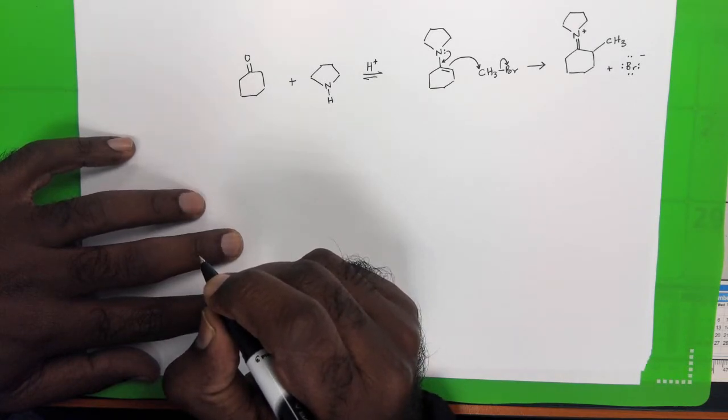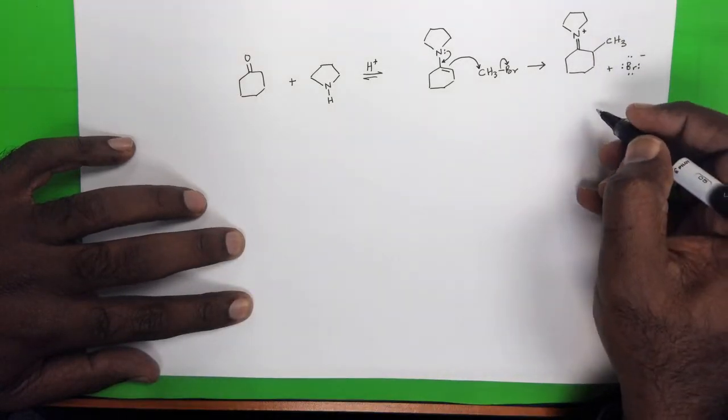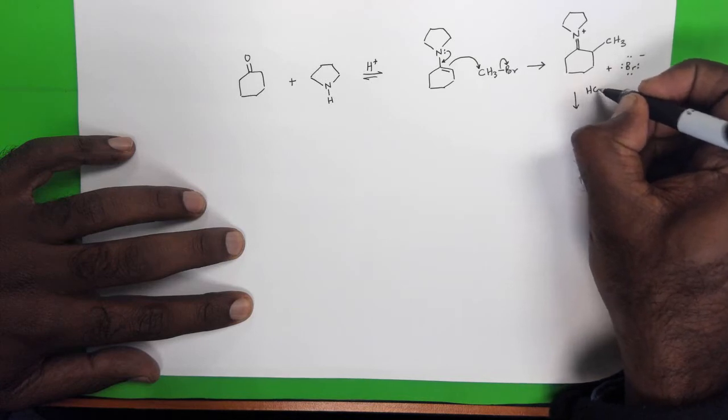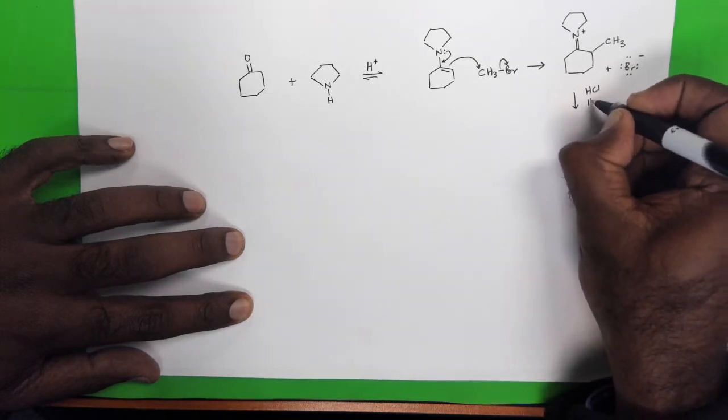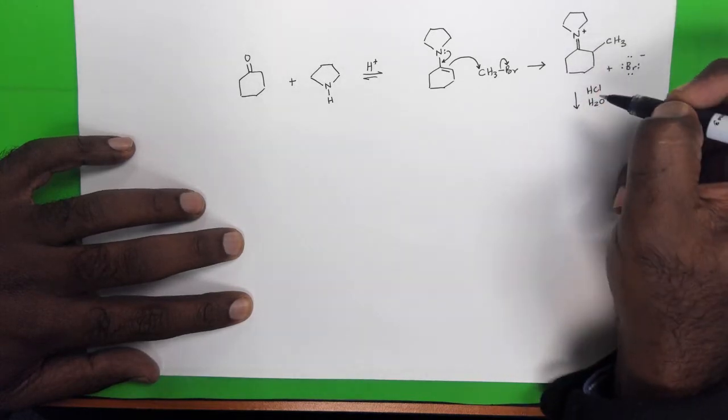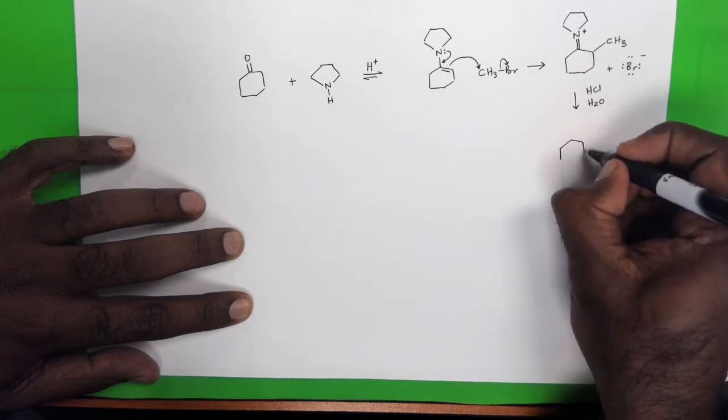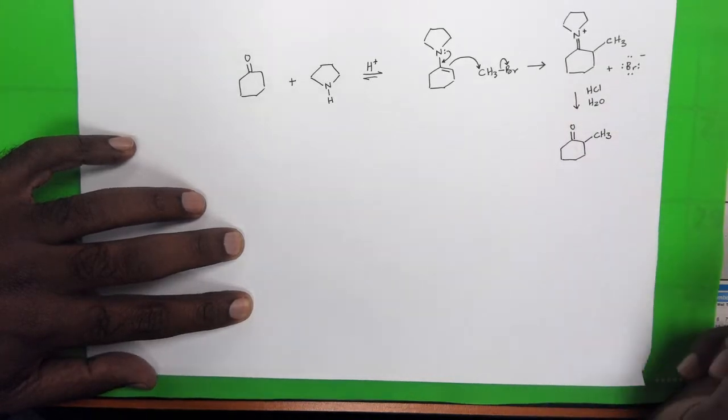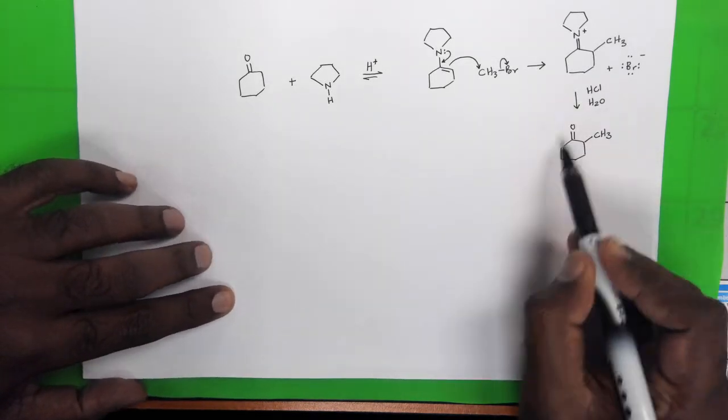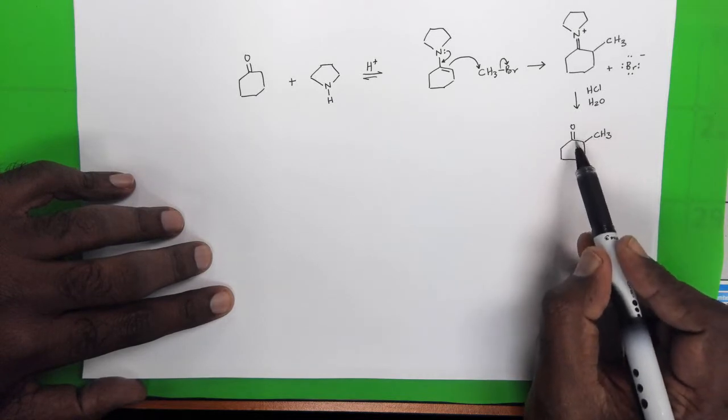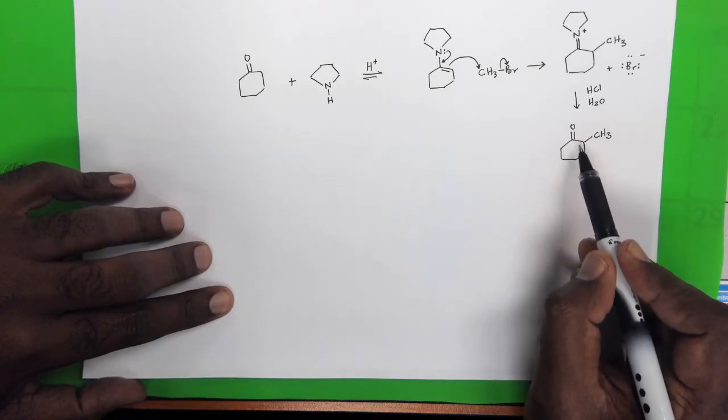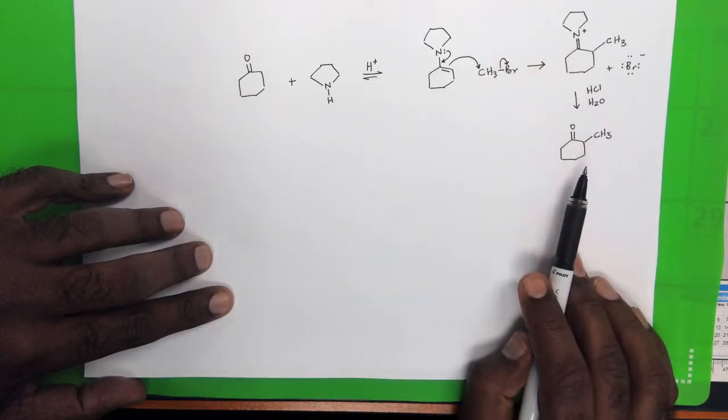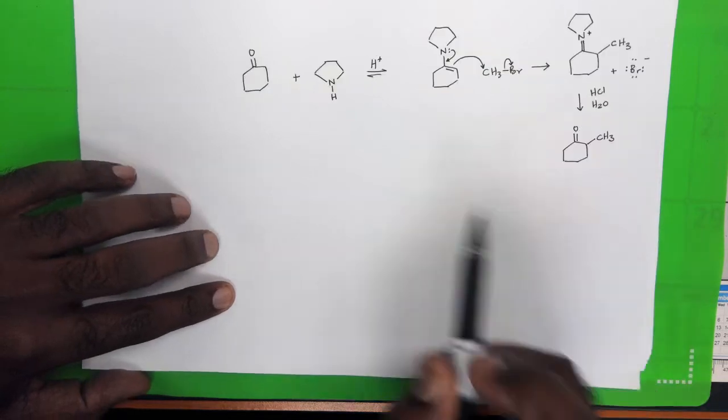And once that happens, I've got this iminium intermediate. And once the iminium intermediate is formed, what we have to do now is hydrolyze. So this is another reaction that you've learned before. I use some acid and water, and I hydrolyze this iminium ion to the ketone. This reaction you have learned before. And you see that the product that we get from this reaction is the same as if we alkylated it via the enolate ion. So this alkylation takes place via an enamine intermediate.